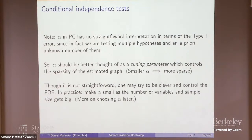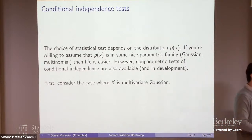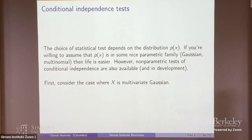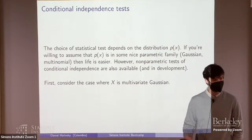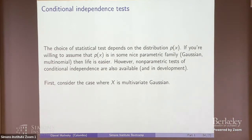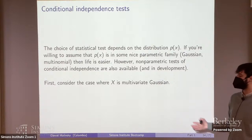There are ways of choosing alpha more deliberately rather than setting it to some fixed level, in ways that might control something like a family-wise error rate or false discovery rate using bounds over the number of tests performed. What statistical independence test would you use? That depends on the family of distributions P of X you're willing to assume. If P of X is in a nice parametric family — for example, Gaussian or multinomial distributions — then life is easier because there are good statistical tests for independence.